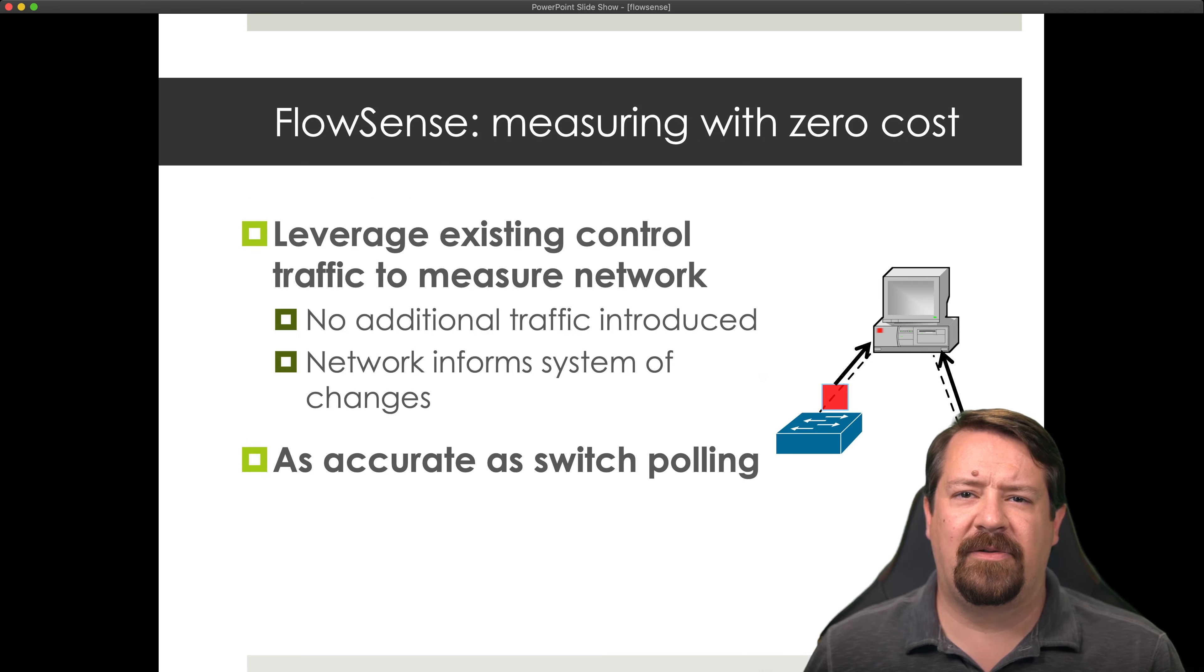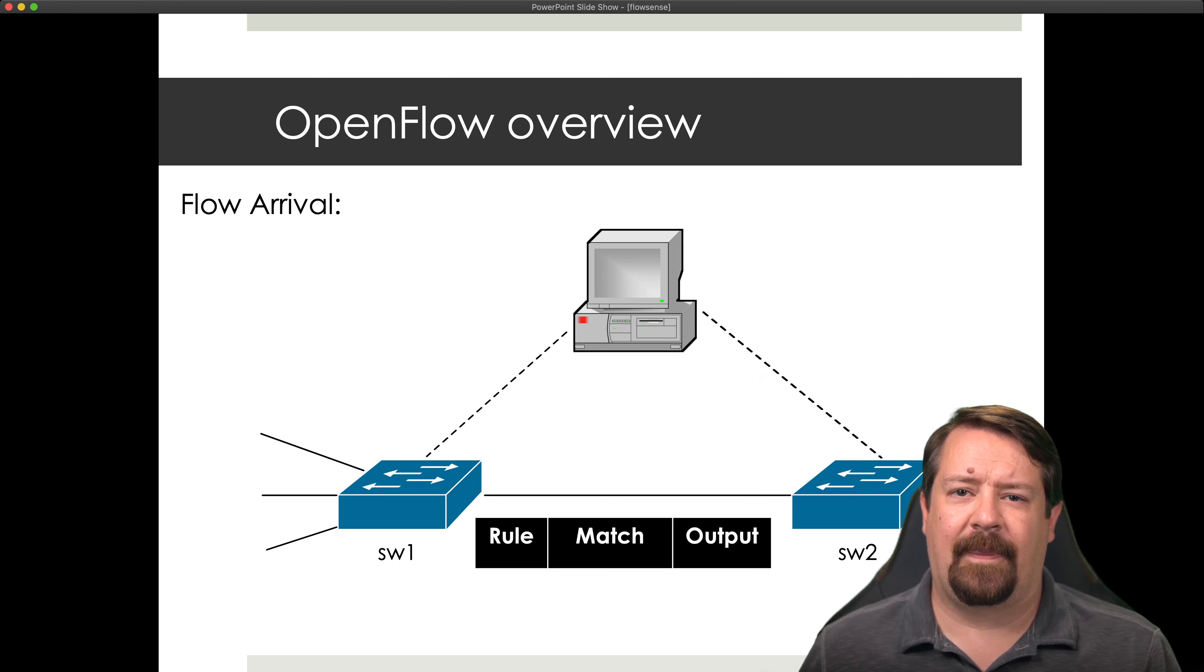For the method that these authors are proposing, the claim is that they're able to perform measurements with no additional cost. They're leveraging the existing control traffic to measure the network. Their benchmark here is switch polling. If you're not familiar with the operation of OpenFlow, you may want to go look at the CS3502 lecture that talks about the rule-based matching that OpenFlow switches perform.